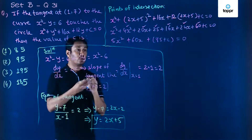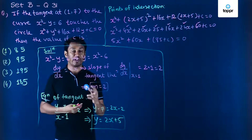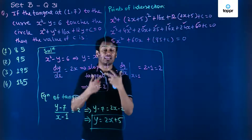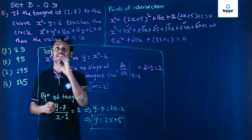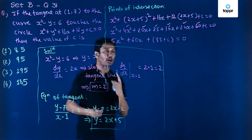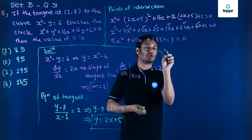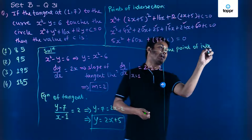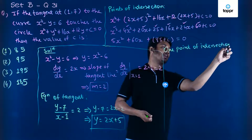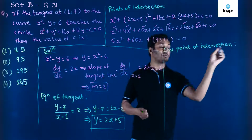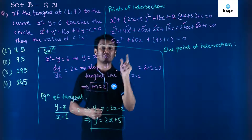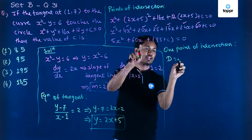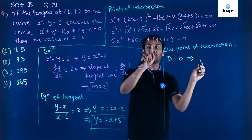This is a quadratic equation which would normally give two values of x if the line intersects the circle in two points. But the question says the line touches the circle, meaning there is only one point of intersection. For that, the discriminant of this quadratic equation must be 0, meaning b squared minus 4ac equal to 0.